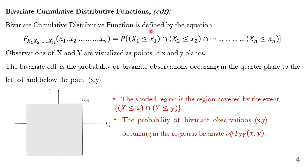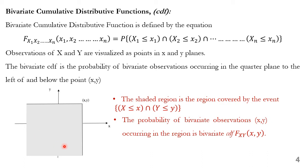The bivariate cumulative distribution function for n random variables is defined as F_{x1, x2, ..., xn}(x1, x2, ..., xn) = probability of (X1 ≤ x1) intersection with (X2 ≤ x2), up to (Xn ≤ xn). The observations of x and y are visualized as points in the xy plane. The bivariate CDF F_xy(x, y) is the probability of bivariate observations occurring in the quarter plane to the left of and below the point (x, y). The shaded region is defined by (X ≤ x) intersection with (Y ≤ y), and the probability of a bivariate observation xy occurring in this region is defined as F_xy(x, y).